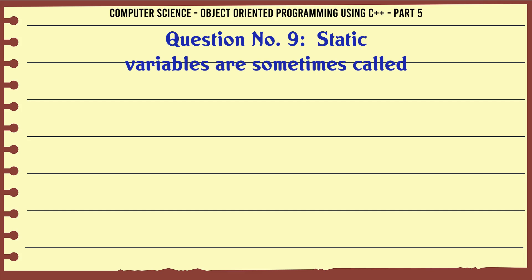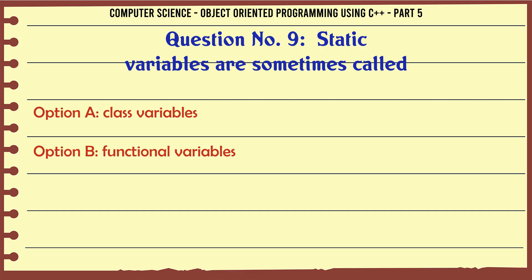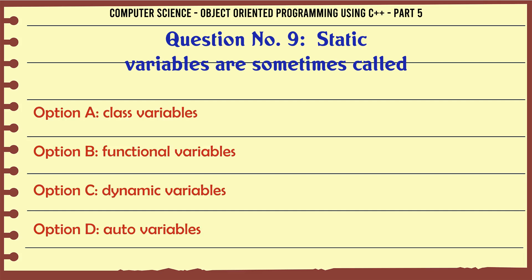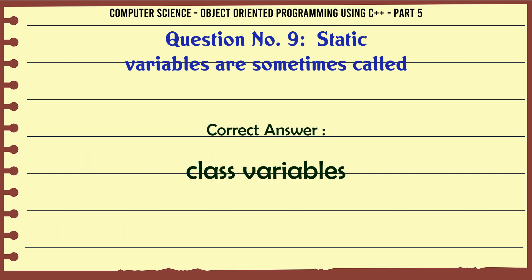Static variables are sometimes called. A. Class variables. B. Functional variables. C. Dynamic variables. D. Auto variables. The correct answer is: Class variables.